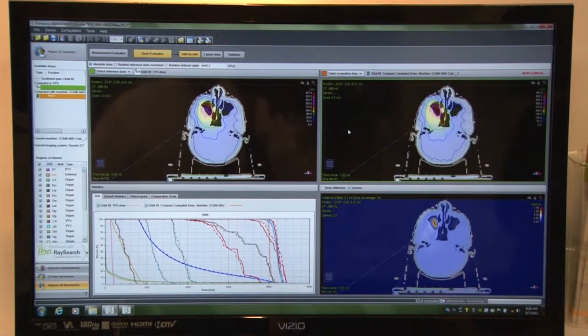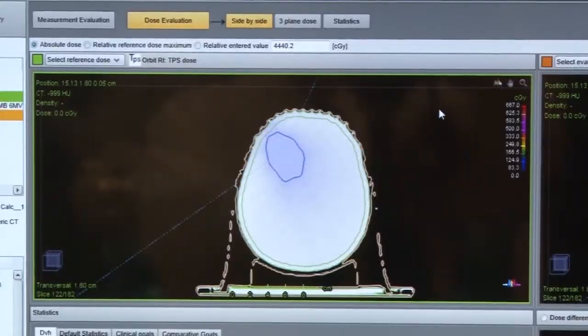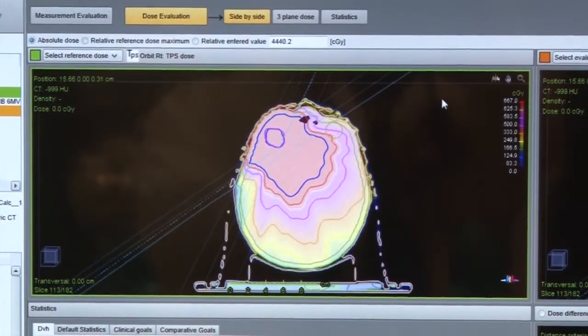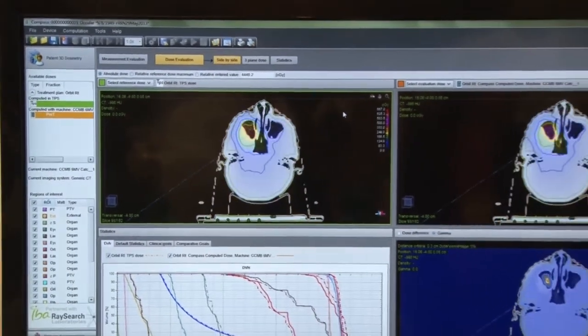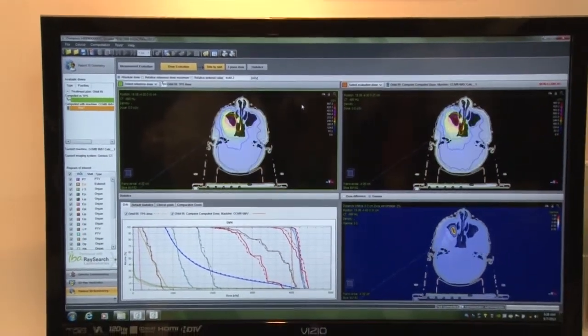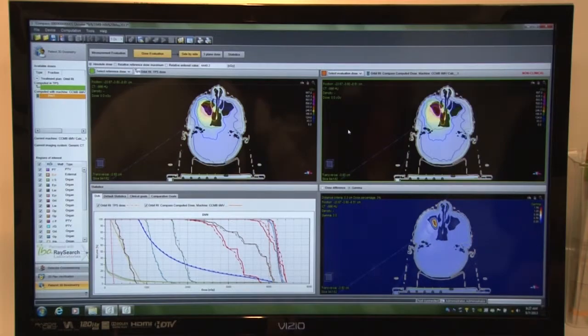So once we've built the model, we have the ability then to calculate it against the planning system. With that particular calculation, we're using a convolution superposition collapse cone algorithm. We're able to import the DICOM file including the RT plan, RT dose structure file, and the CT data set of the patient. We then take the RT plan file, run it through our dose engine, recompute everything on the patient CT data set. And the wonderful thing about it is we're using an independent beam model for this and a collapse cone algorithm.